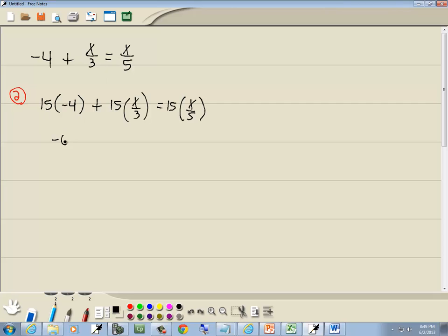15 times negative 4 gives us negative 60. Here, 15 and 3 are both divisible by 3. 3 divided by 3 is 1, 15 divided by 3 is 5. 15 and 5 are both divisible by 5. 5 divided by 5 is 1, 15 divided by 5 is 3.